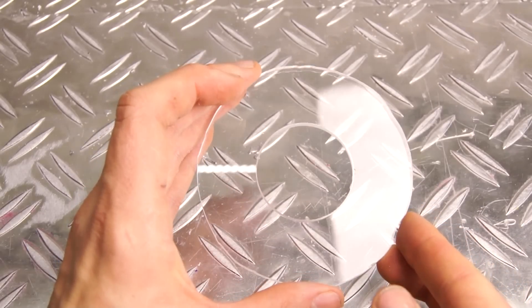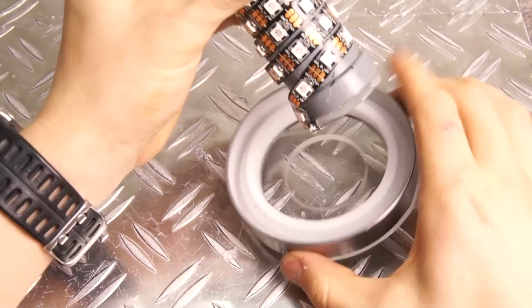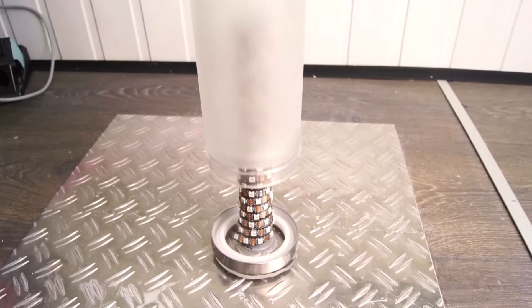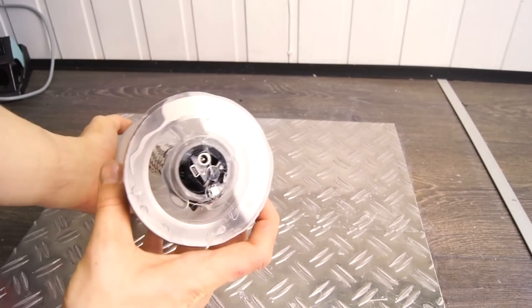So once we have removed the protective film from the acrylic we can glue it to the lid and the PVC pipe. And then we can add the jar to the lid. If I'm allowed to say that.